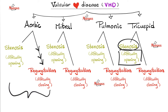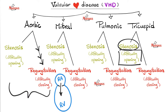Let's draw a right atrium and a right ventricle. The right atrium is here, the right ventricle is here, and between them we have the tricuspid valve. Stenosis is difficulty at opening. When is the tricuspid valve supposed to open? During diastole of the ventricle. Therefore, tricuspid stenosis produces a diastolic murmur — just like mitral stenosis, which is also a diastolic murmur, because the mitral valve and the tricuspid valve are both atrioventricular valves.